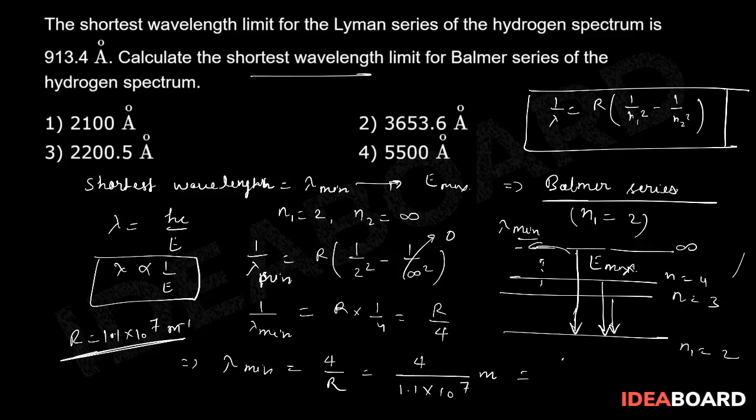So what I can write? I can write it 4000 into 10 to the power minus 10. If you multiply it with 10 to the power 10, this will be in angstrom, divided by 1.1. So this is approximately, I can say, lambda min which is equal to 3654 angstrom, correct? So obviously option number 2 is the only choice for us, equal to 3655.6 angstrom.